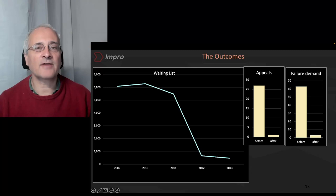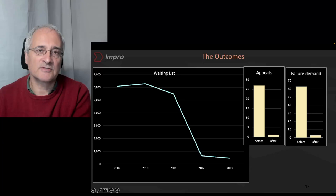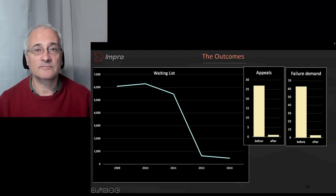And we also found that failure demand, which is the demand that the service has caused repeat demands to come back in, dropped right down. These are examples of what happens when we actually go to a complex service and apply complex methods. It fundamentally changes the nature of that service. And in the case of Yarmouth, what actually happened is, even though we improved people's outcomes significantly, we reduced the work involved, the number of people that needed to do this actually dropped.